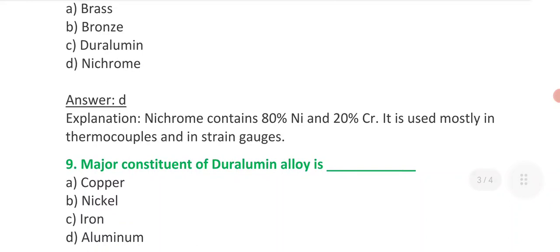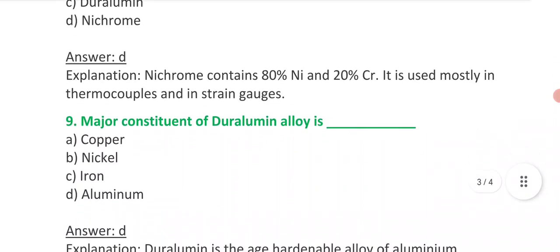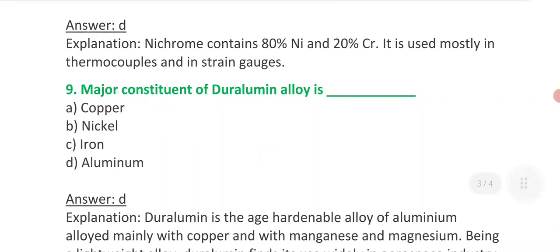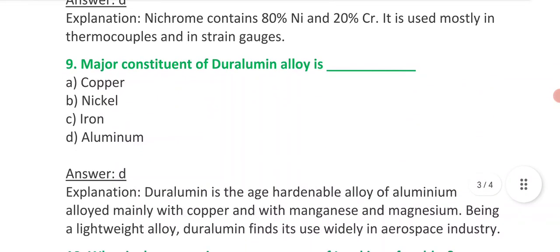Ninth question is: major constituent of duralumin alloy is - A copper, B nickel, C iron, D aluminum. Answer is D. Duralumin major constituent is aluminum. And duralumin is the age hardenable alloy of aluminum.